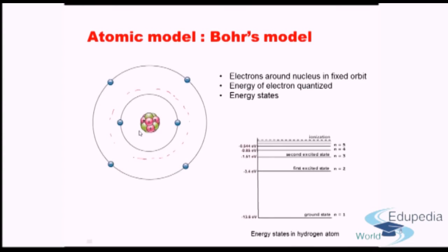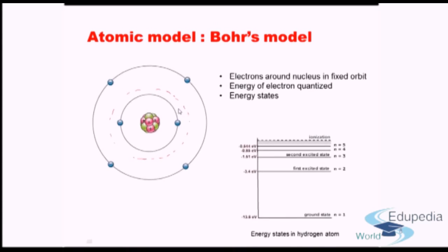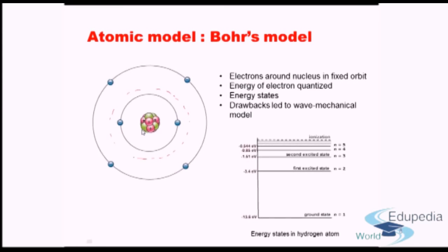What is the drawback of Bohr's model? Bohr's model defines definitive orbits in which electrons revolve. However, any charged particle undergoing acceleration loses energy — this is a fundamental principle of physics. Since revolution is accelerated motion, electrons should lose energy and spiral down into the nucleus. That does not happen, so Bohr's model has a clear shortcoming. This led to the development of what is known as the wave mechanical model.